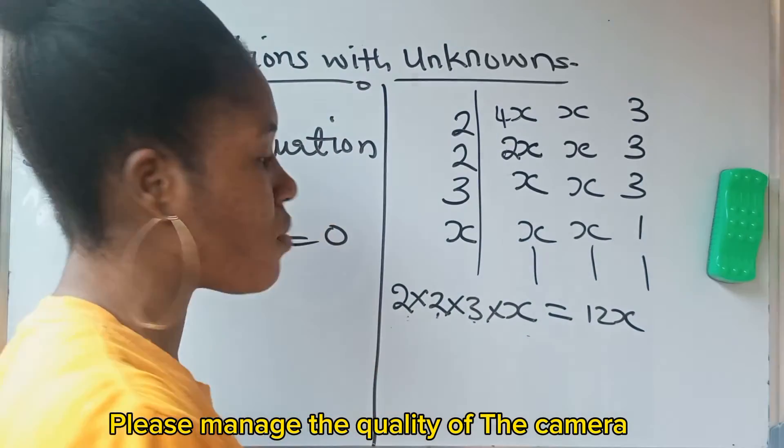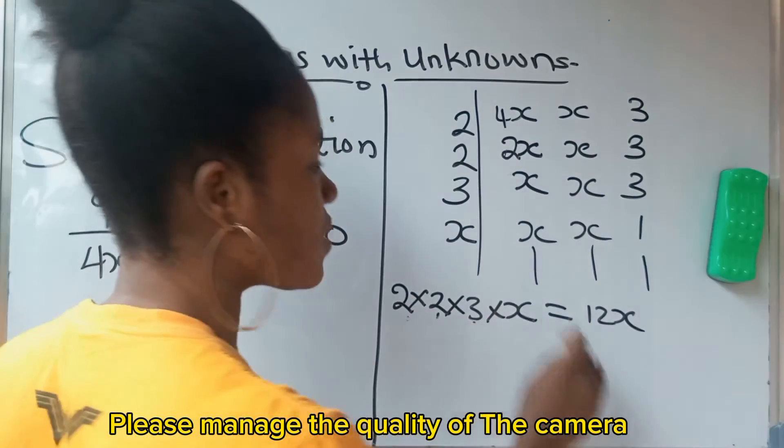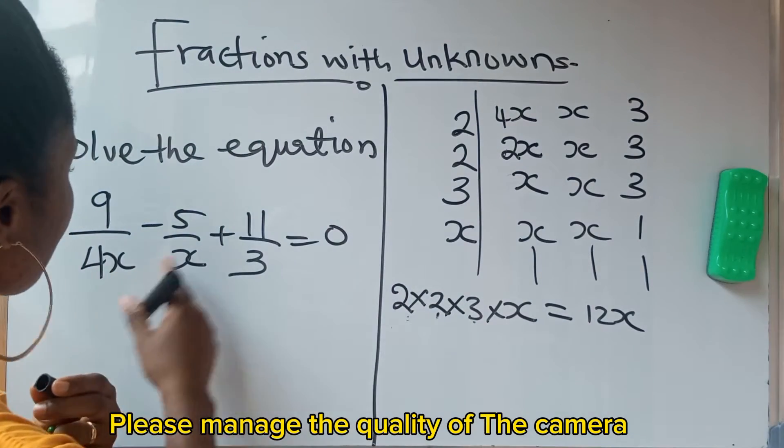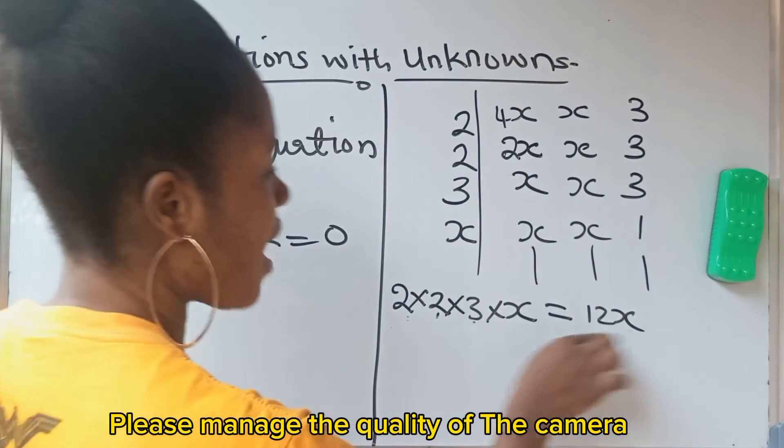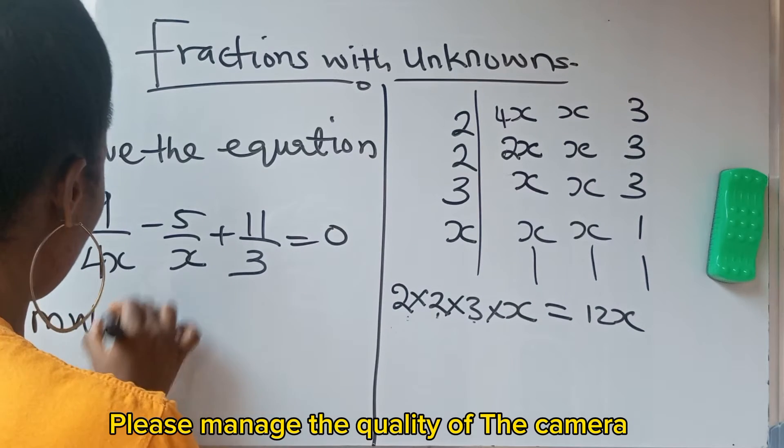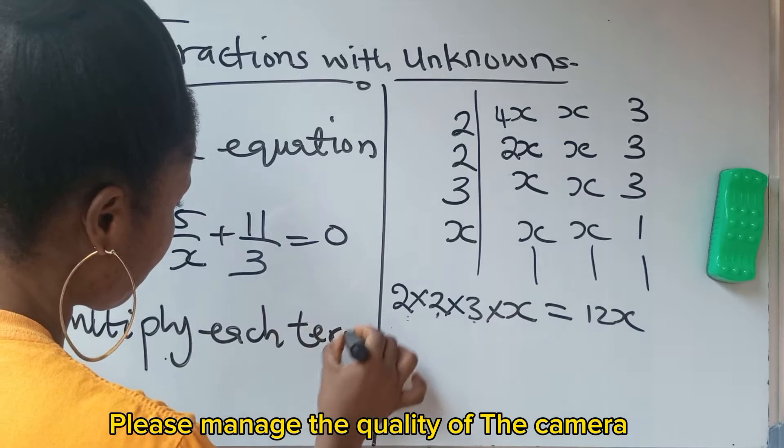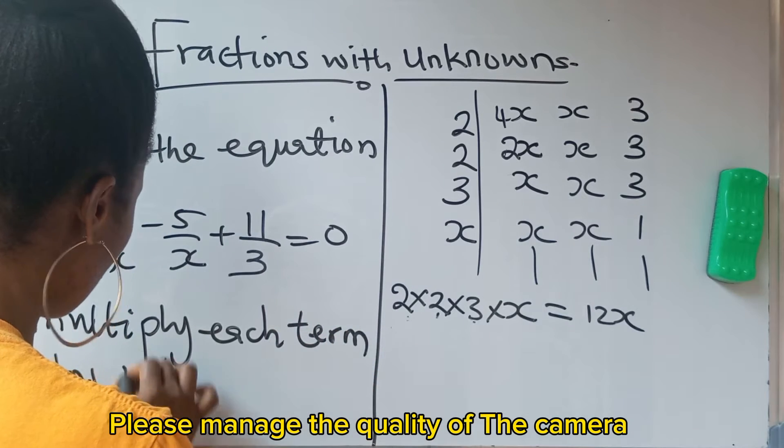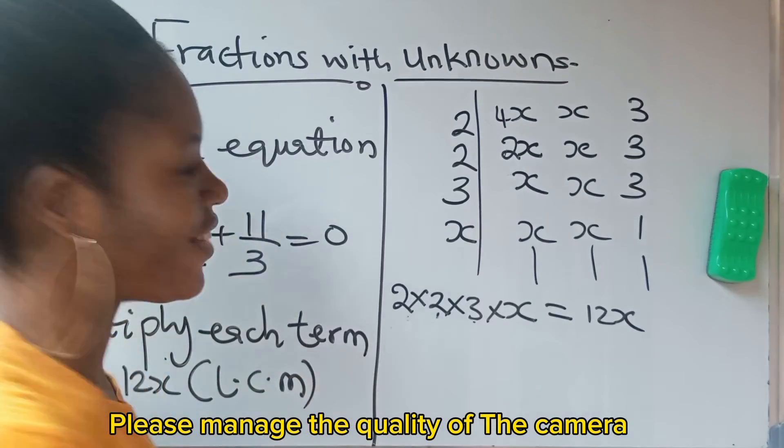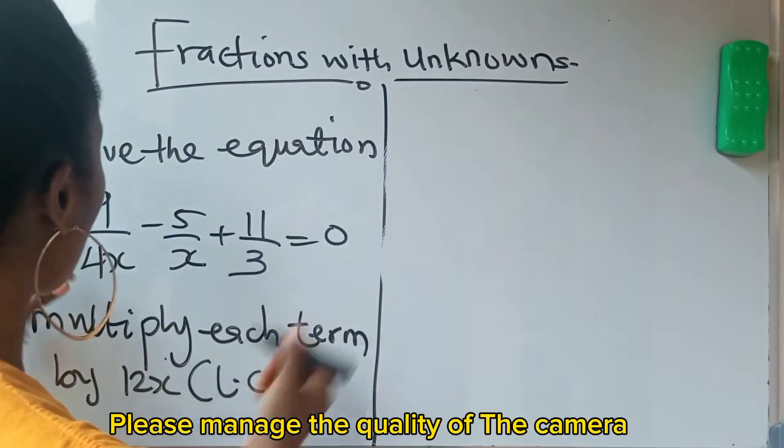So it means that the LCM is 12x. So what do we do with this LCM that we just found? All you need to do is multiply each term of this equation by their LCM. Multiply each term by the LCM. Multiply each term by 12x, which is the LCM. Let's do that quickly.